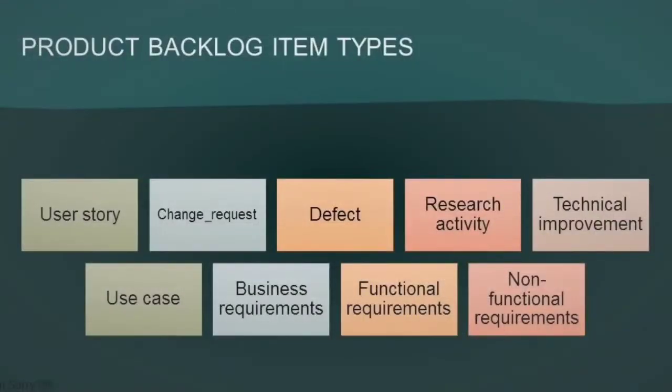Product backlog item types include: user story, change request, defect, research activity, technical improvement, use case, business requirements, functional requirements, and non-functional requirements.